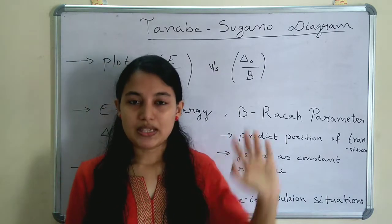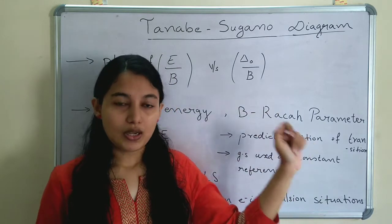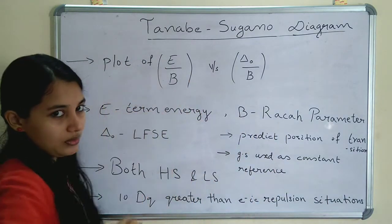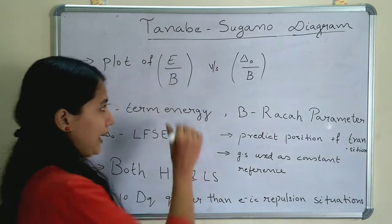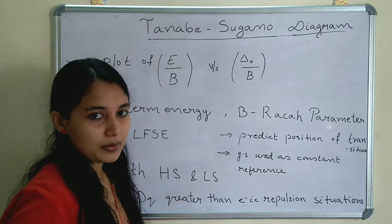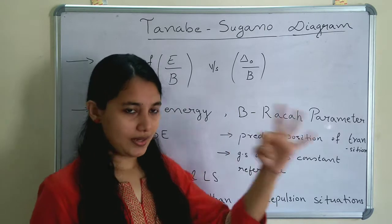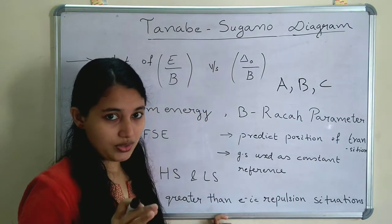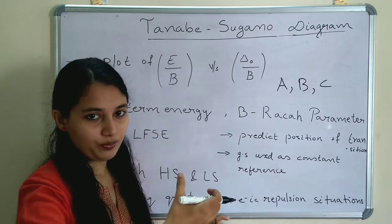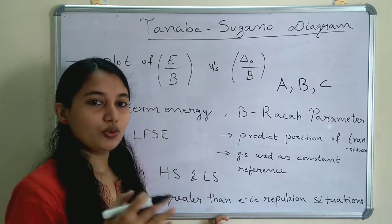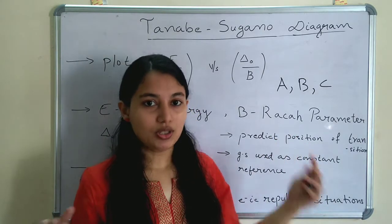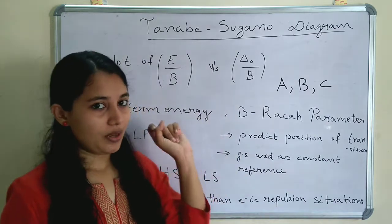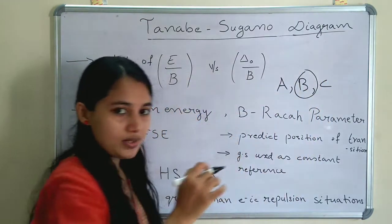What is the Tanabe-Sugano diagram? It is a graph of E/B versus ΔO/B. E is the term energy and B is the Racah parameter. Racah parameters are A, B, and C — constants used to measure inter-electronic repulsion. In the Tanabe-Sugano diagram, we need only one Racah parameter, which is B. So B has great importance in the TS diagram.